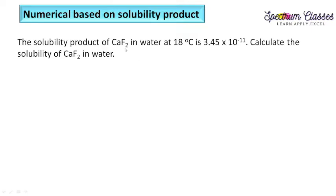The next numerical: the solubility product of CaF₂ in water at 18 degrees centigrade is 3.45 × 10⁻¹¹. Calculate the solubility of CaF₂ in water. Here Ksp is given and solubility s is asked. First we write the equation, because from this we get the idea about the solubility product formula.